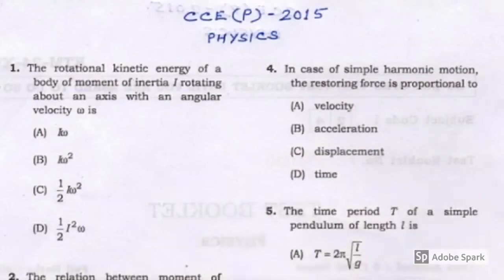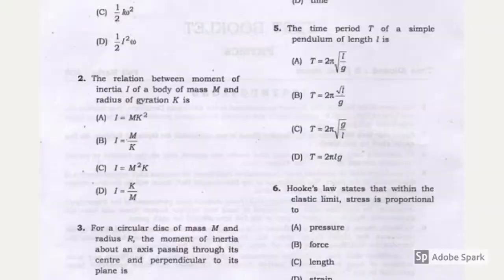Let's look at 2015 prelims paper. Question one is very simple, it relates rotational kinetic energy with angular velocity omega and obviously the option is D. You can download these question papers from APSC site or else I'll upload them year-wise and will also give the solutions later on.